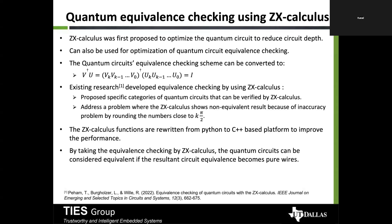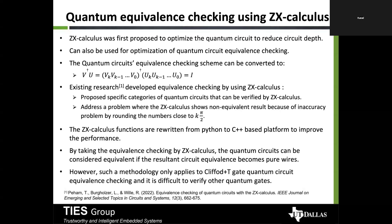For equivalence checking with ZX calculus, quantum circuits can be considered equivalent if the resultant certificate becomes pure wires — meaning all the Z and X spider nodes (circles) disappear and you are left with just wires. However, this methodology only applies to Clifford+T gate quantum circuit equivalence checking; it is very difficult to verify other gate sets.